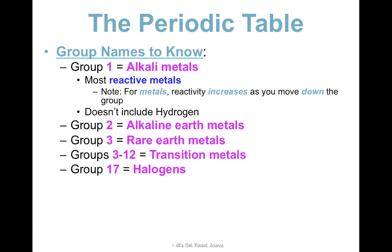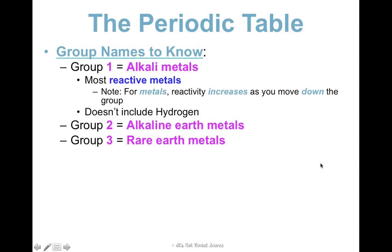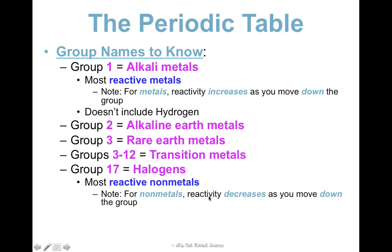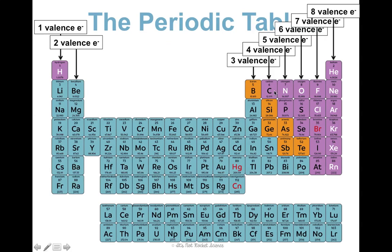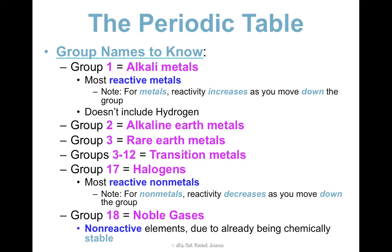I do want you to know that group seventeen is the halogens. These are the most reactive non-metals — they really want to bond with other things. Their reactivity actually decreases as you move down the group. So metals increase in reactivity going down, non-metals decrease. The most reactive non-metal is fluorine, and the most reactive metal is francium. Then, group eighteen is the noble gases. These are non-reactive elements because they are chemically stable — their outer energy levels are full of electrons, so they don't want to react with other things.